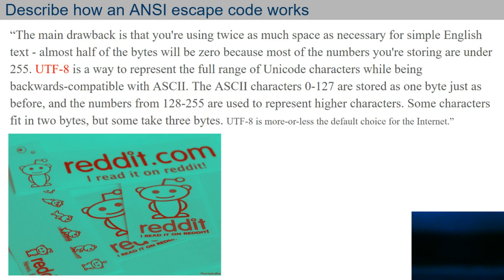Some of the symbols you can make are pretty crazy. The person on Reddit was saying that the main drawback is that you're using twice as much space as necessary for simple English text — almost half of the bytes will be zero because most of the numbers you're storing are under 255. But if you think about the size most hard drives can hold nowadays — if you have a one-terabyte drive, that's one trillion bytes. Having a couple extras shouldn't be too big a deal. But if it is, here's UTF-8. UTF-8 is a way to represent the full range of Unicode characters while still being backwards compatible with ASCII. ASCII characters 0 to 127 are stored as one byte just as before. Numbers 128 to 255 are used to represent the higher characters — some characters fit in two bytes, but some take three bytes.